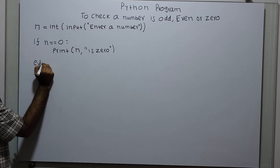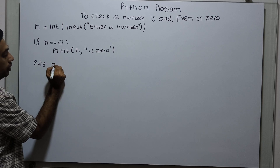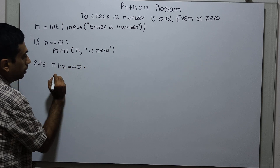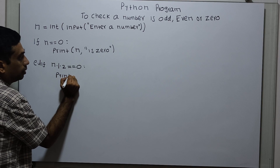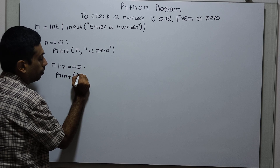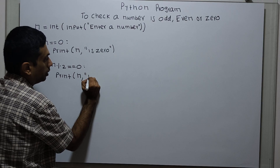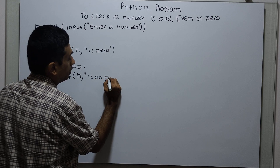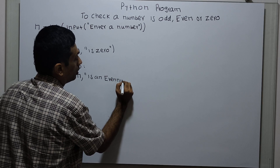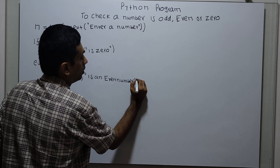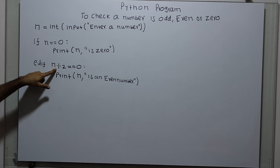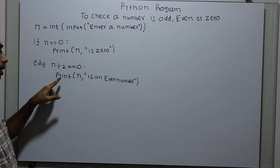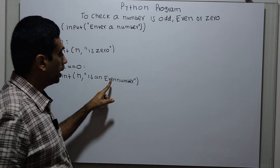I am checking elif n % 2 == 0. I print n and the string 'is an even number'. The modulo operator returns the remainder. If we divide n by 2 and the remainder is 0, I am printing that n is an even number.